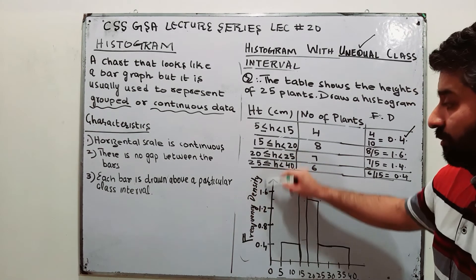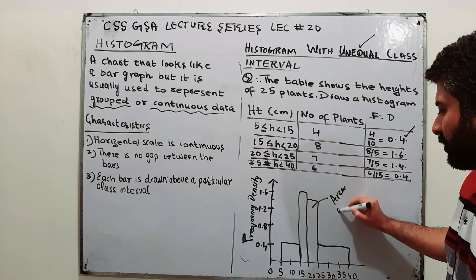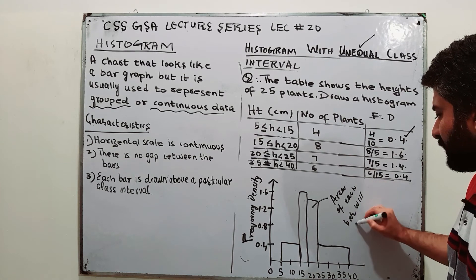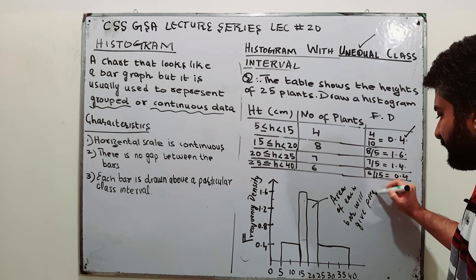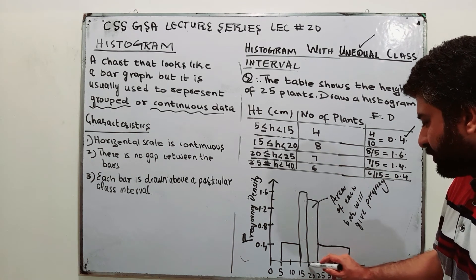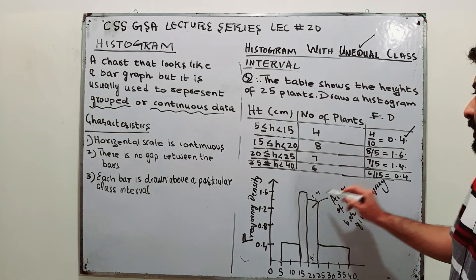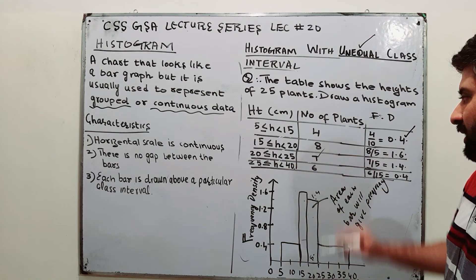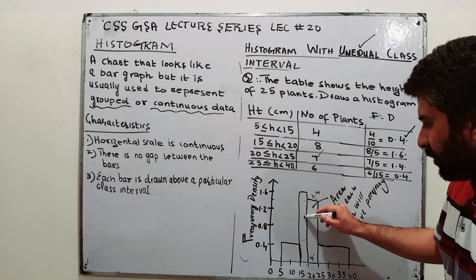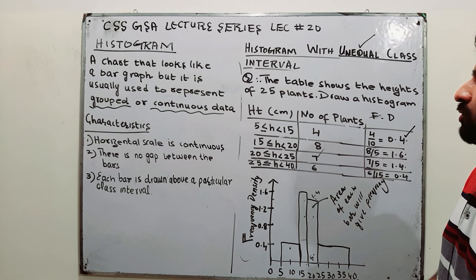This histogram is plotted using frequency density. One more important thing: the area of each bar gives you the frequency of that interval. For example, the bar for 20 to 25 has base 5 and height 1.4, so 5 × 1.4 = 7, which is the frequency of that class. So area of each bar gives you the frequency of the respective class.